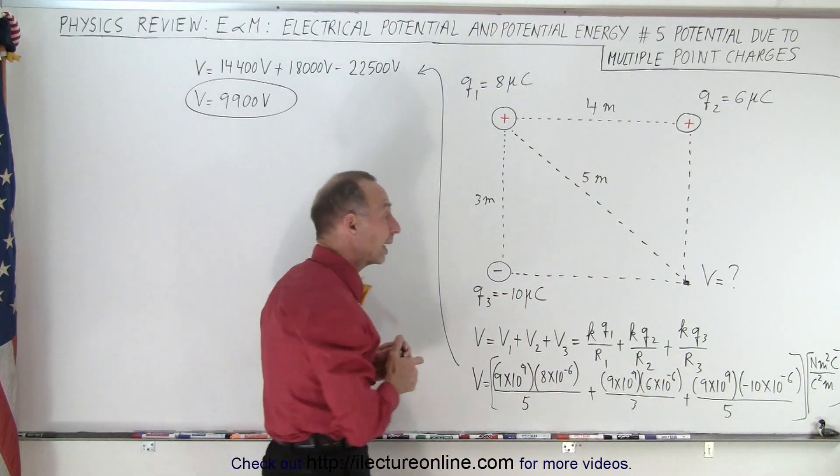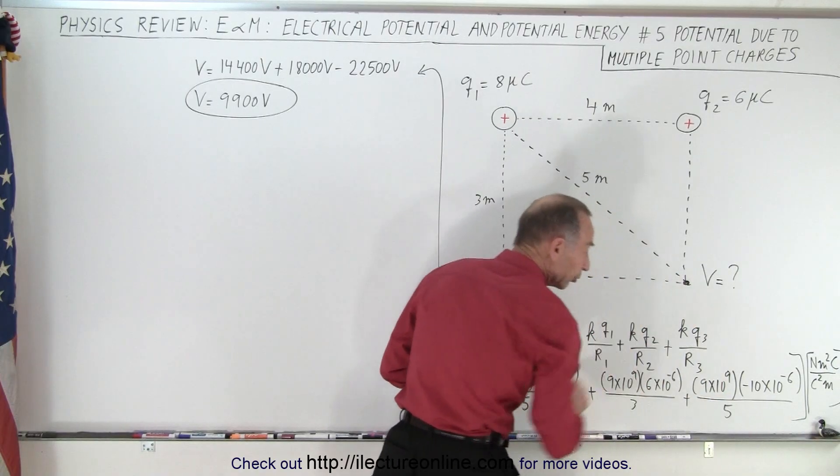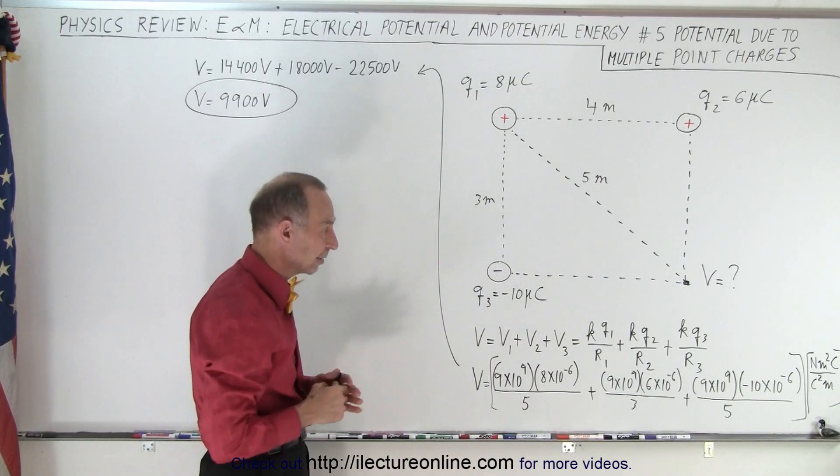Now notice though that q3 will be a negative charge. This will form or cause a negative voltage to exist there, so we'll end up subtracting that voltage rather than adding that voltage.